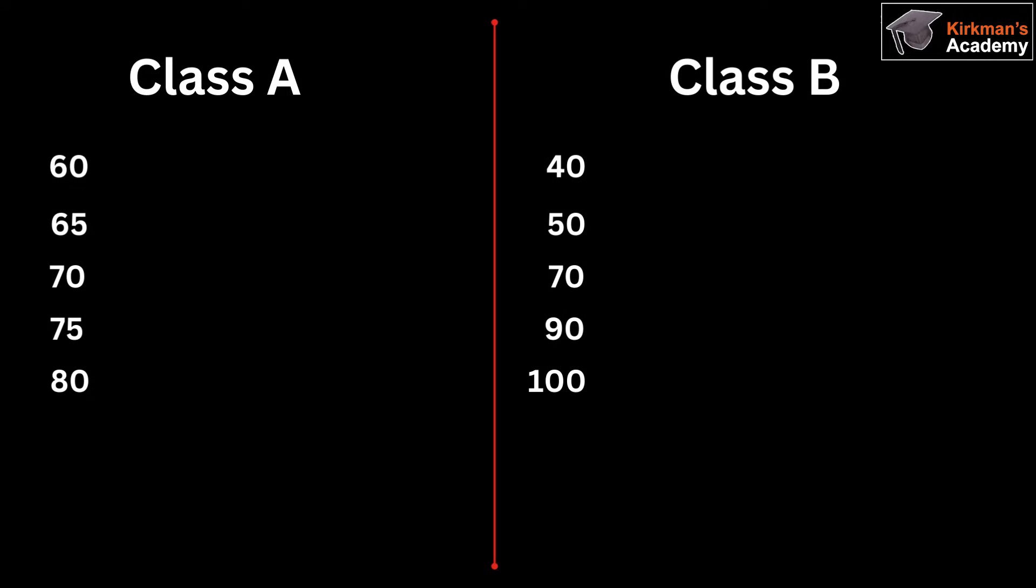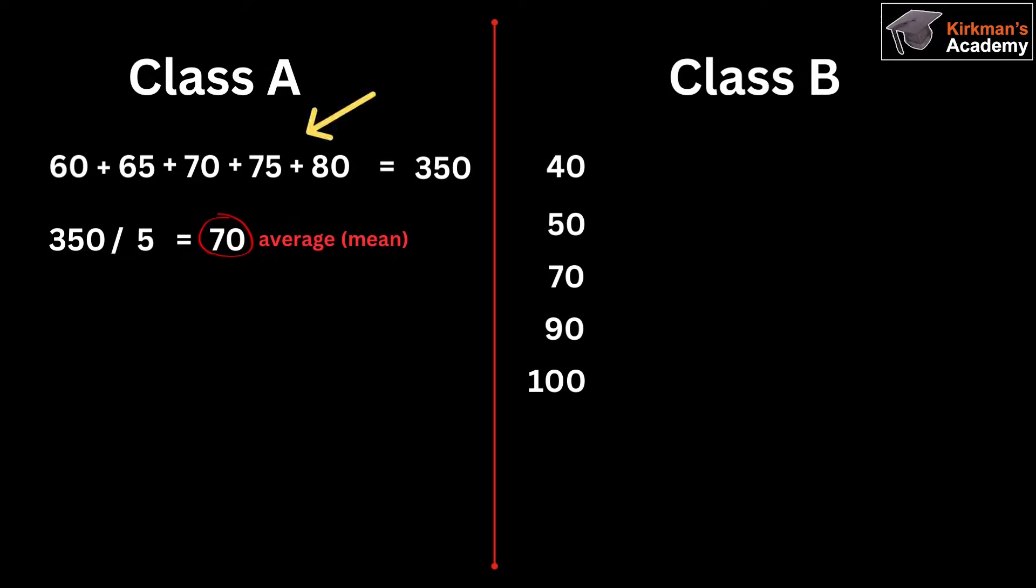We firstly need to calculate the average value of each group's test results. So beginning with Class A, which equals 70. 70 is the average, or mean, of these test results.